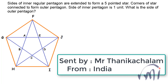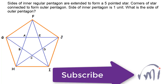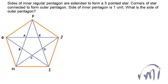Here we have a problem which was sent by Mr. Tanika Chalam from India, and this problem we are going to solve using two methods. In the first method we will solve it using trigonometry, and another method which was sent by Mr. Tanika Chalam is pure geometry. The problem statement is: sides of an inner regular pentagon are extended to form a five-pointed star. Corners of the star are connected to form the outer pentagon. Sides of the inner pentagon are one unit. What is the side of the outer pentagon?